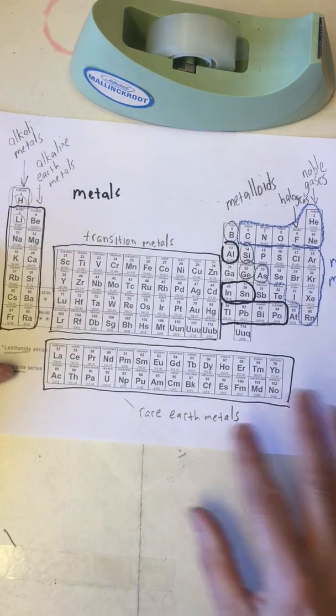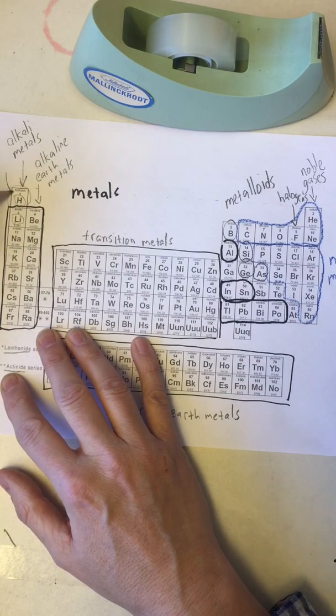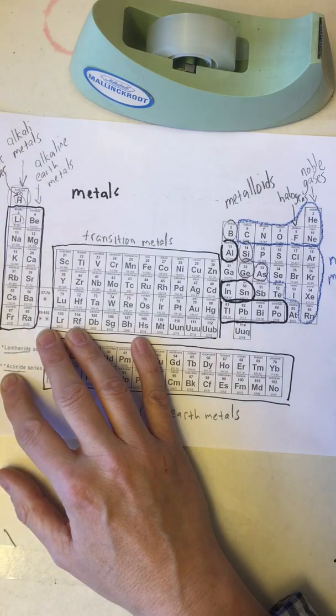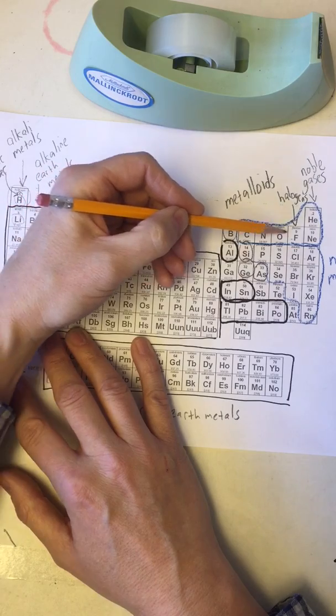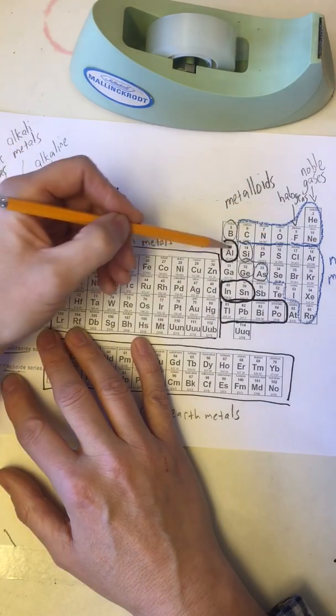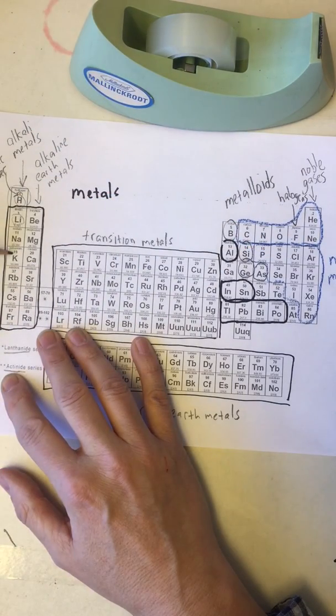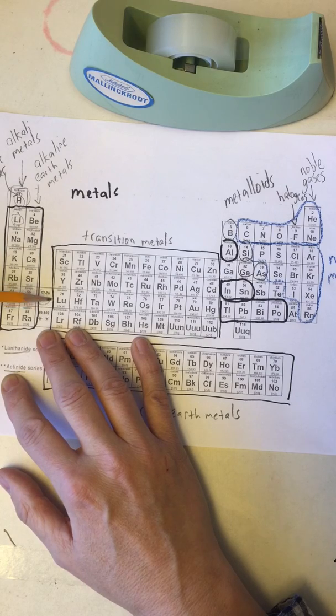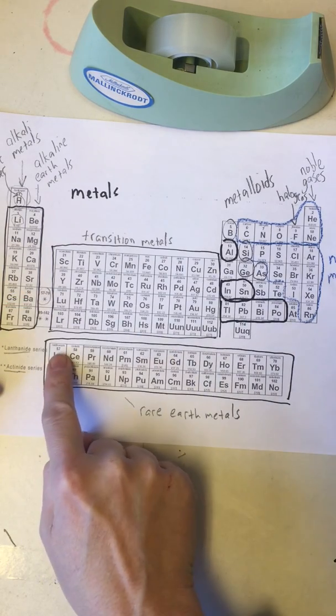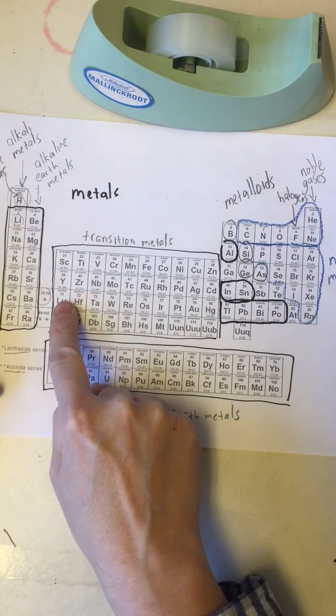The second piece of information is the atomic number. The atomic number is written above the symbol, so for hydrogen it's one. For example for boron it's a five. And notice there's a pattern: one, two, then we come down to the second row three, four, five, six, seven, eight, nine, ten. Then we come over here eleven, twelve, thirteen, fourteen, all the way through eighteen, nineteen all the way through thirty-six, thirty-seven all the way to fifty-four.